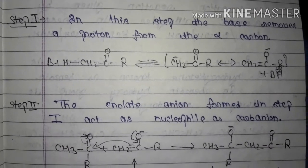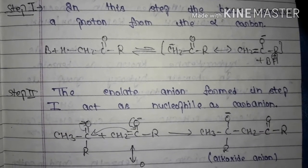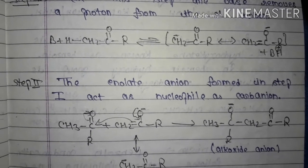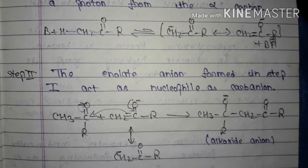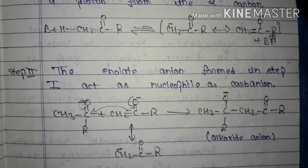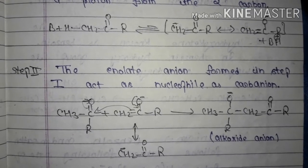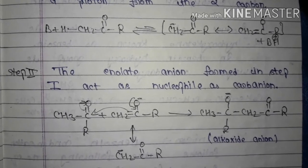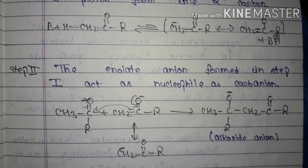Step one of the mechanism: in this step the base removes a proton from the alpha carbon. That is, B⁻ + H-CH2-C=O → the base removes the hydrogen, so from the alpha carbon one proton is removed, giving CH2⁻ with a negative charge, because a proton was removed there and its valency is incomplete.